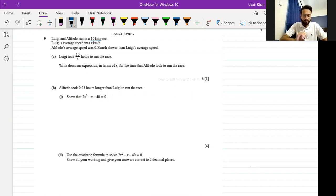Luigi and Alfredo run in a 10 kilometers race. Luigi's average speed was x kilometers per hour. Alfredo's average speed was 0.5 kilometers slower than Luigi's average speed, so that makes his speed x minus 0.5 kilometers per hour. He's slower than Luigi, therefore the speed will be 0.5 lesser than Luigi's speed.